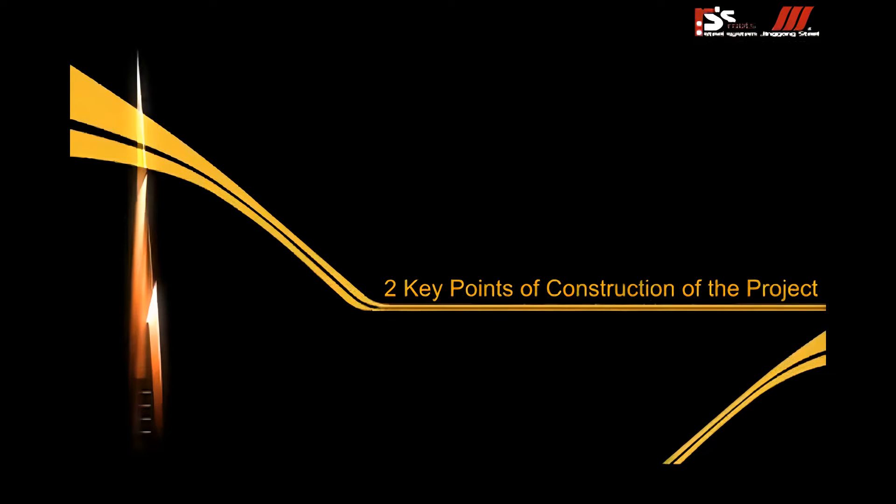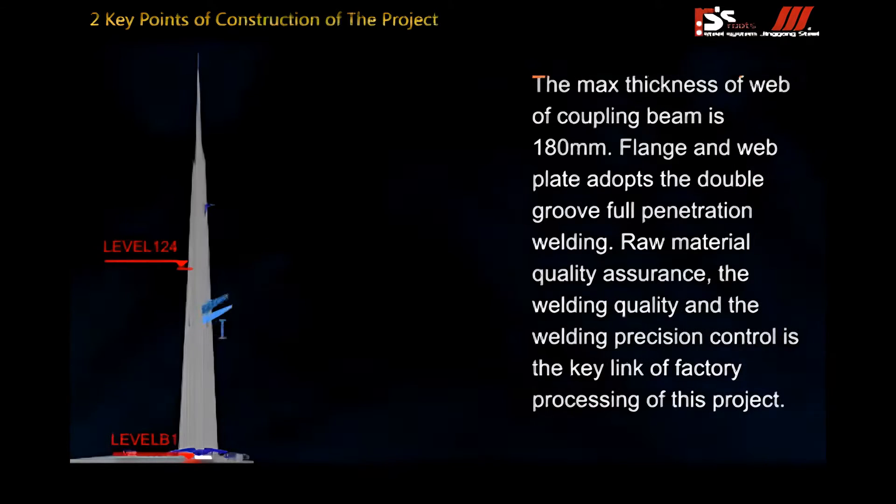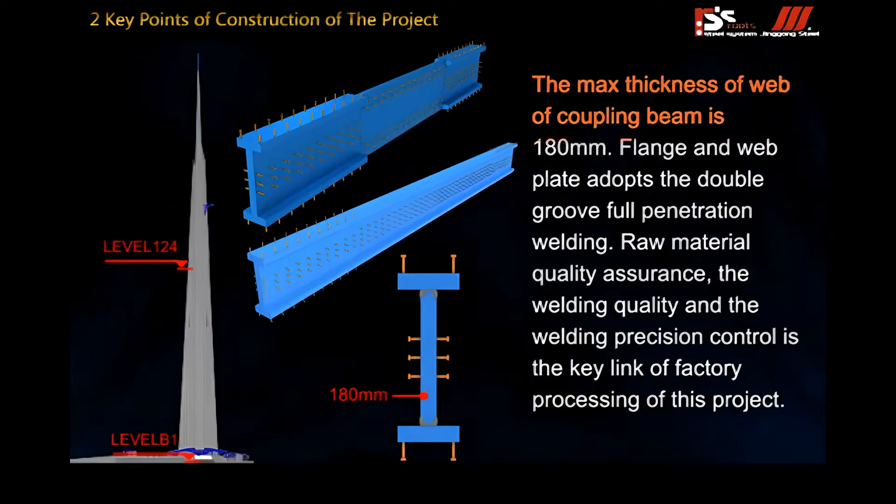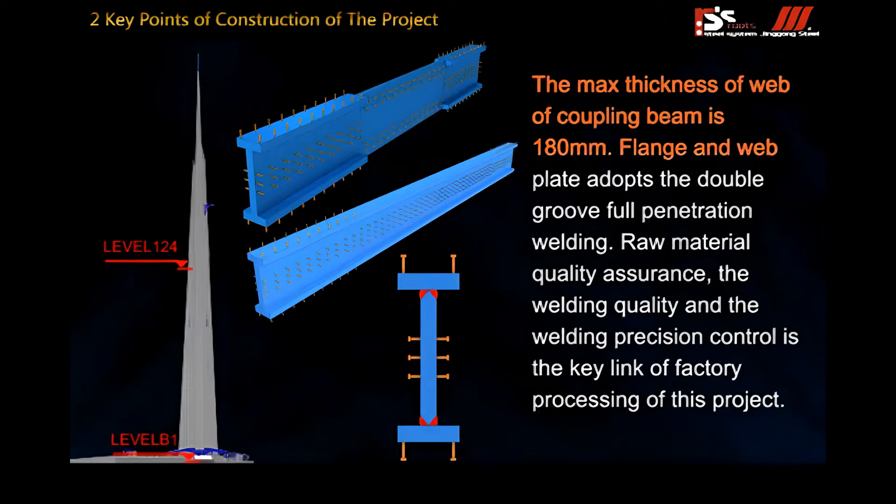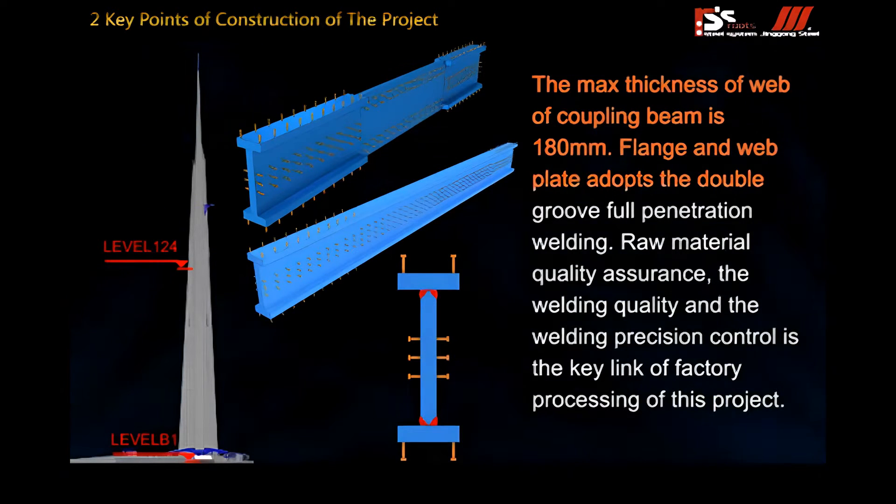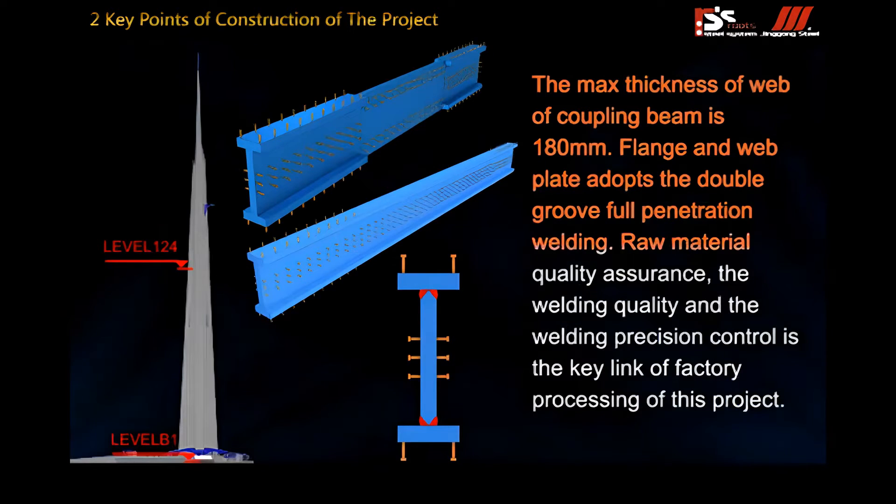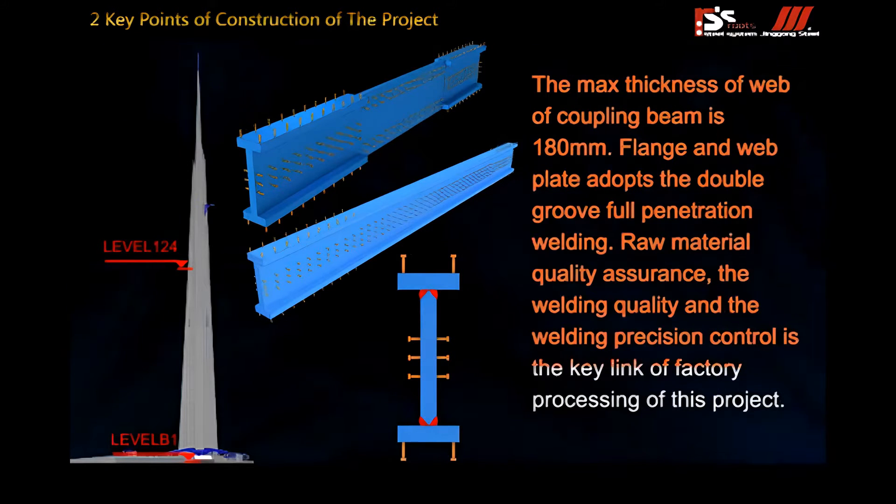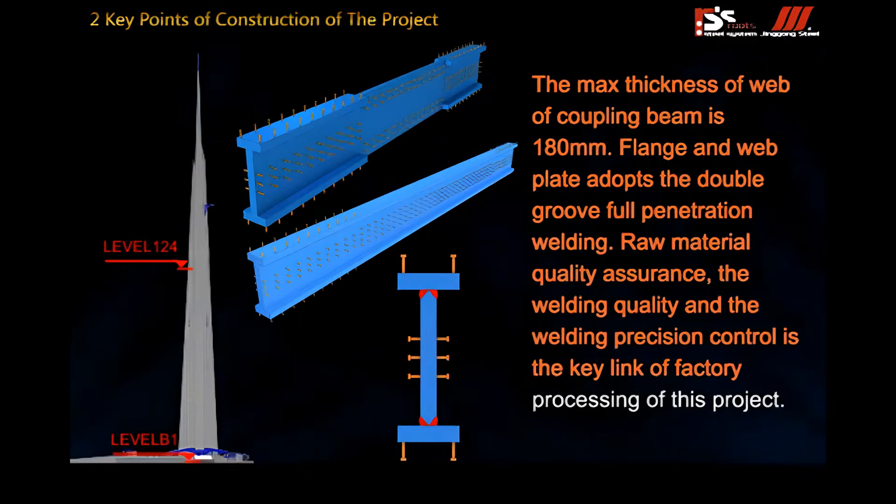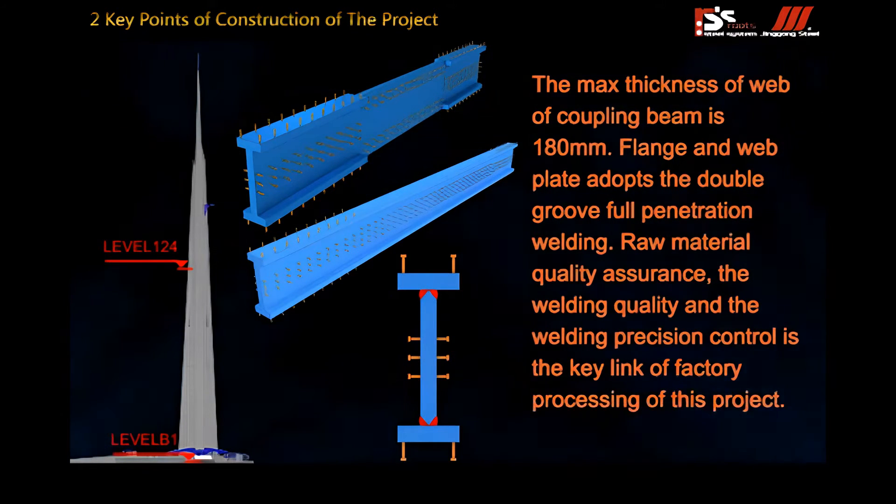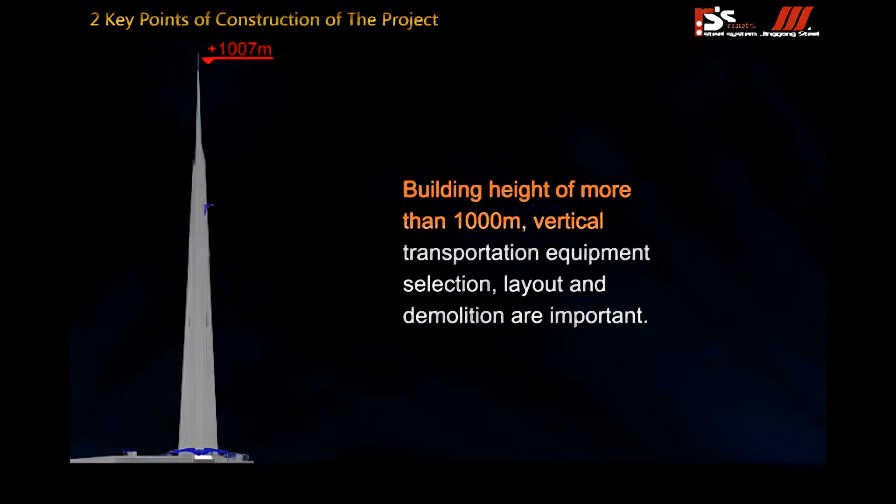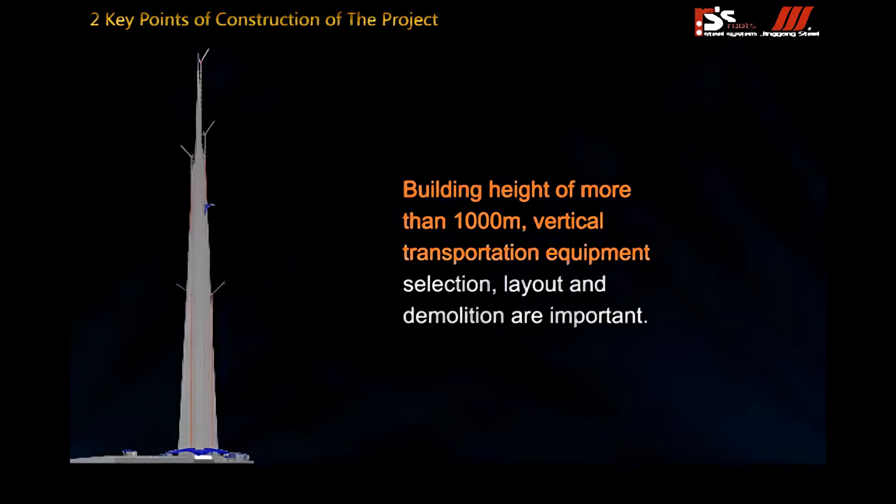Second, key points of construction of the project. The maximum plate thickness of coupling beam is 180 millimeters. Flange and web plate adopt the double groove full penetration welding. Raw material quality assurance, welding quality and welding precision control is the key link of factory processing of this project. Building height of more than 1,000 meters, vertical transportation equipment selection, layout and demolition are important.